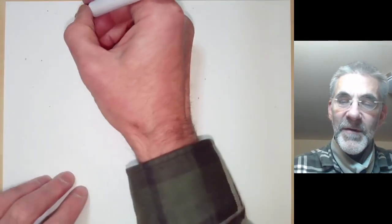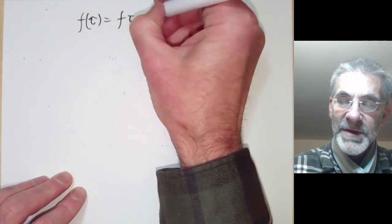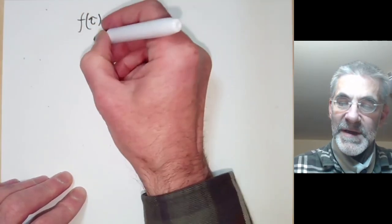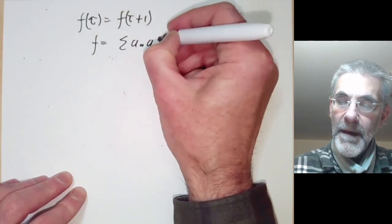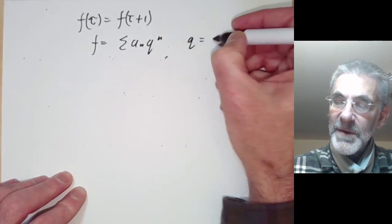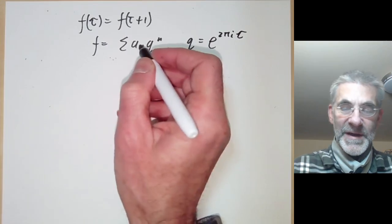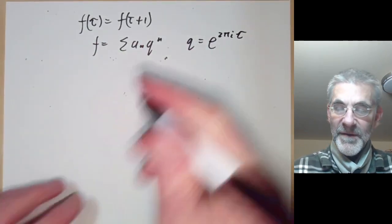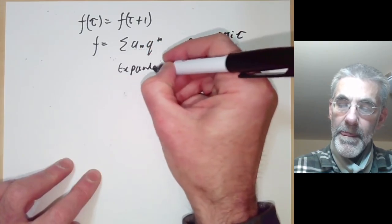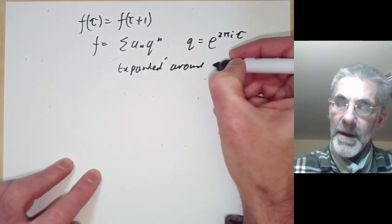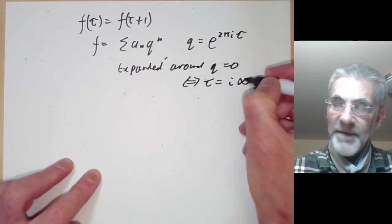So first of all if we've got a modular function or modular form, then f of tau is equal to f of tau plus 1. So this means f can be written as a function of q where q is equal to e to the 2 pi i tau. So this is just a Fourier series or Laurent expansion of f, and this is expanded around q equals 0 which corresponds to tau being equal to i infinity.